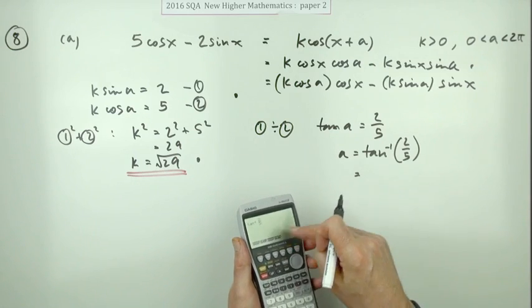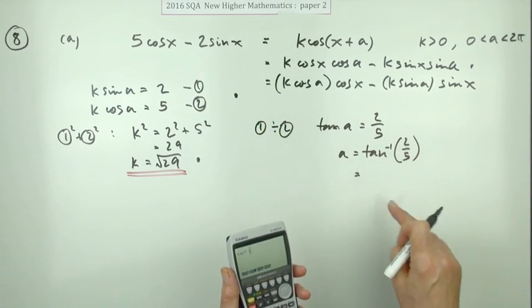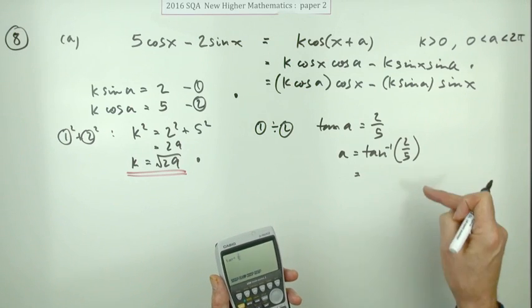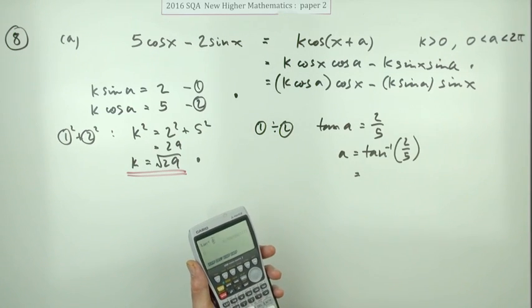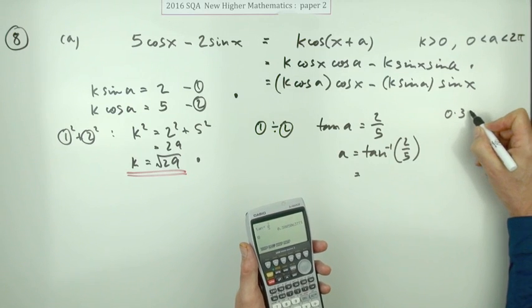Put it into a calculator making sure it's in radians, or you could get it in degrees and then change your answer afterwards into radians. As long as you change it into radians, put it into a calculator - gives you this.